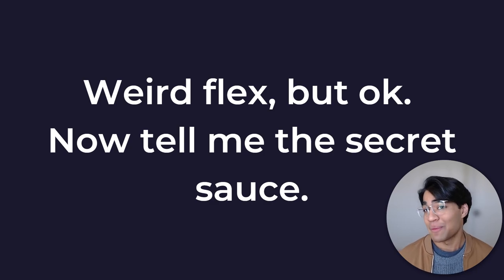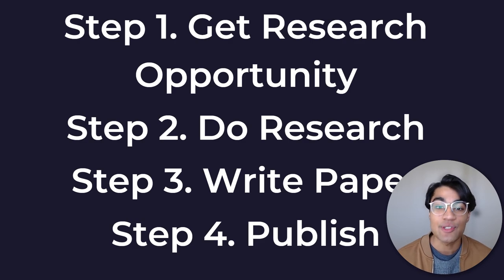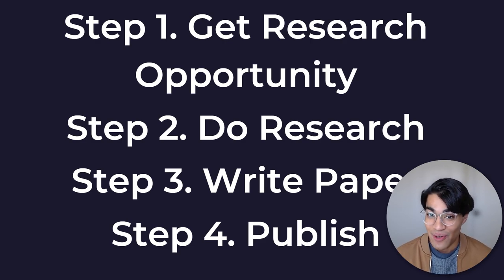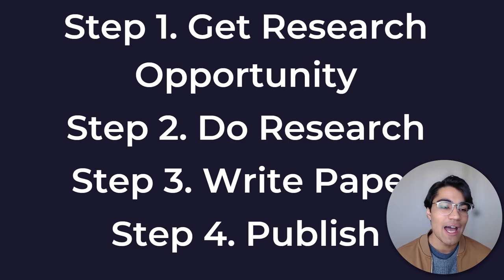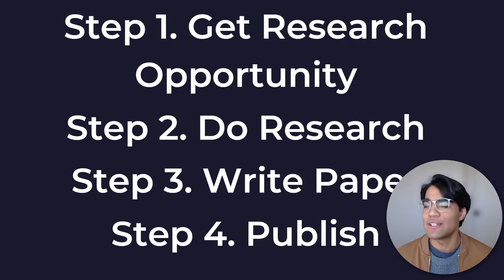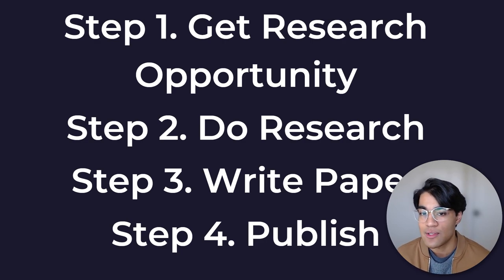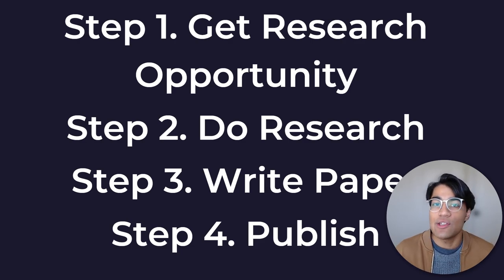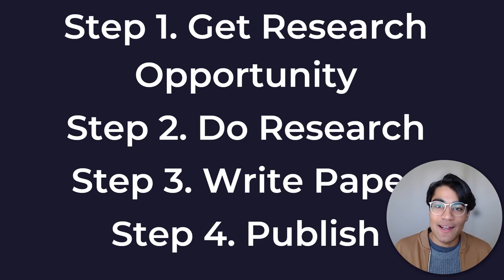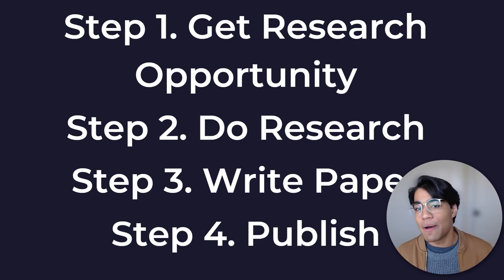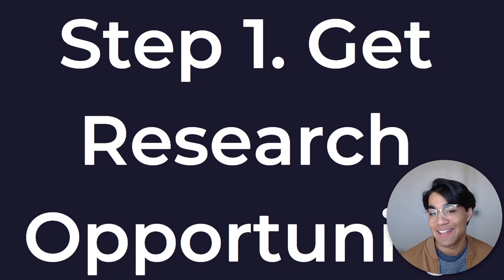Now I'm going to tell you the secret sauce. Step one: how you can actually get the research opportunity, because many of us don't have a lab right next to us. Step two: doing the research — what are the really important things for high schoolers to focus on? You have the general idea of background, methodology, results, and conclusions, but what do you actually need to focus on? Step three: writing a paper, which develops your scientific communication skills and ultimately leads to publication. Let's get started with step number one: getting the research opportunity.